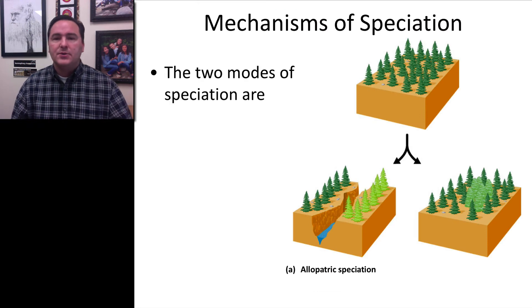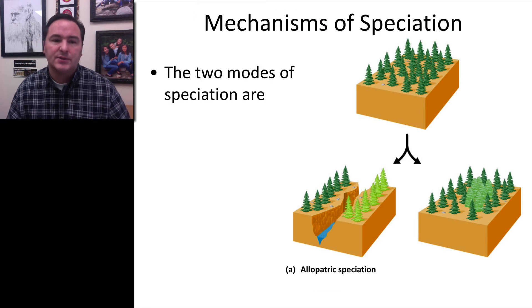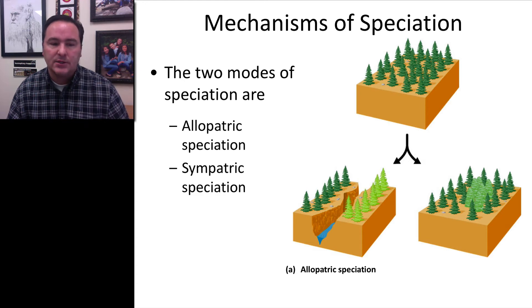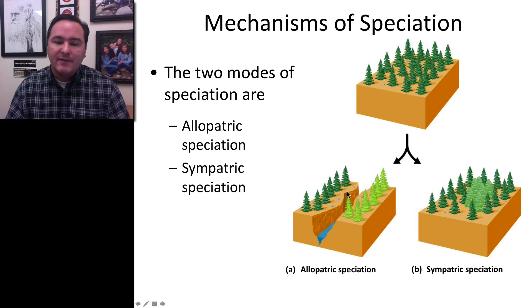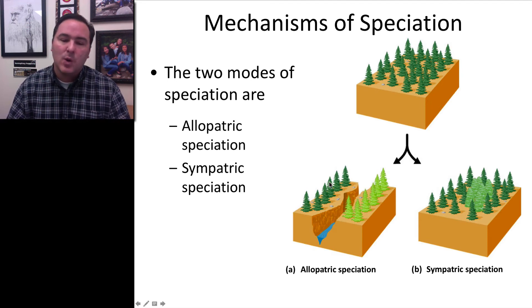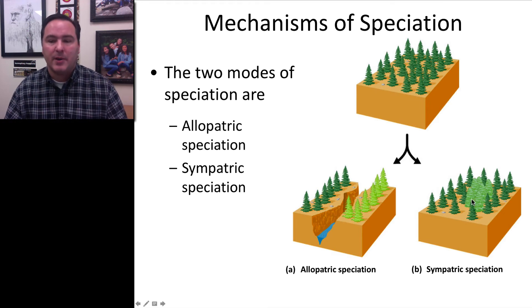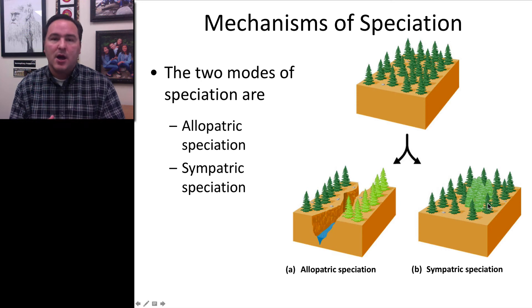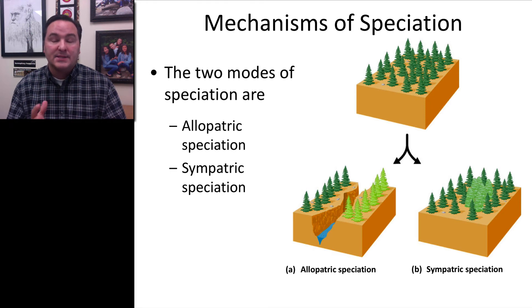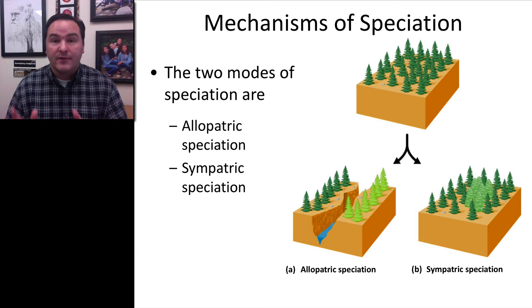There are two main mechanisms of speciation: allopatric speciation and sympatric speciation. In allopatric speciation, by definition, a geographic barrier isolates one population from another until they have been isolated long enough to become different species. In sympatric speciation, there is no geographic barrier — the two populations are living side by side in contact, and other mechanisms cause them to become genetically isolated.